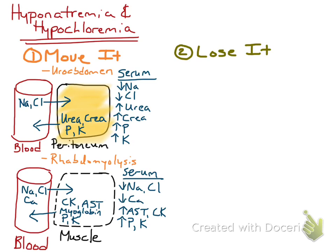However, myoglobin is readily excreted by the kidney — it has a very low renal threshold — so really you'll see red urine before you see red plasma. This is called myoglobinuria.